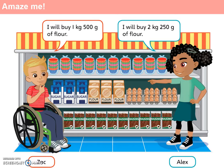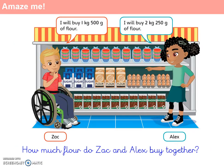Let's take a look at question 1a: how much flour do Zach and Alex buy together? For this question I want you to think about what are the key words that can help you identify which operation to use. Then I want you to think carefully about the way that you can show your understanding before you actually apply it and calculate the answer.